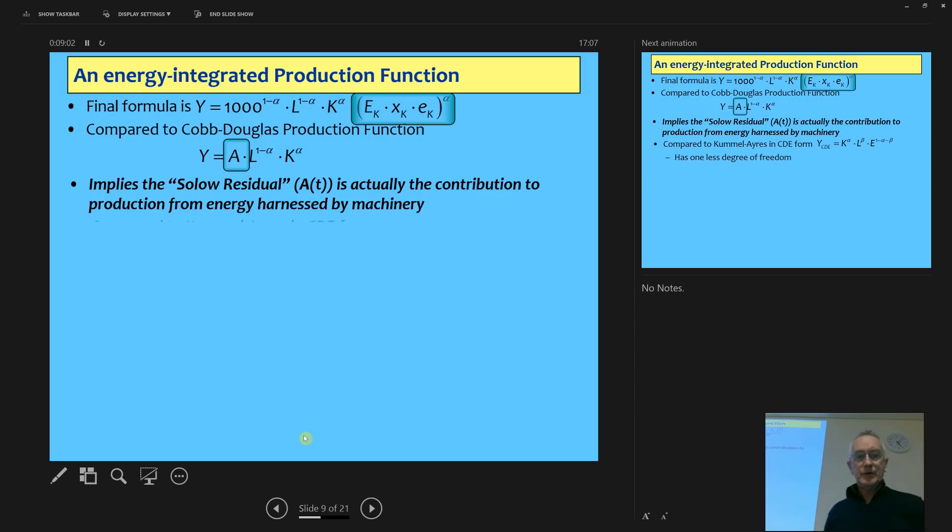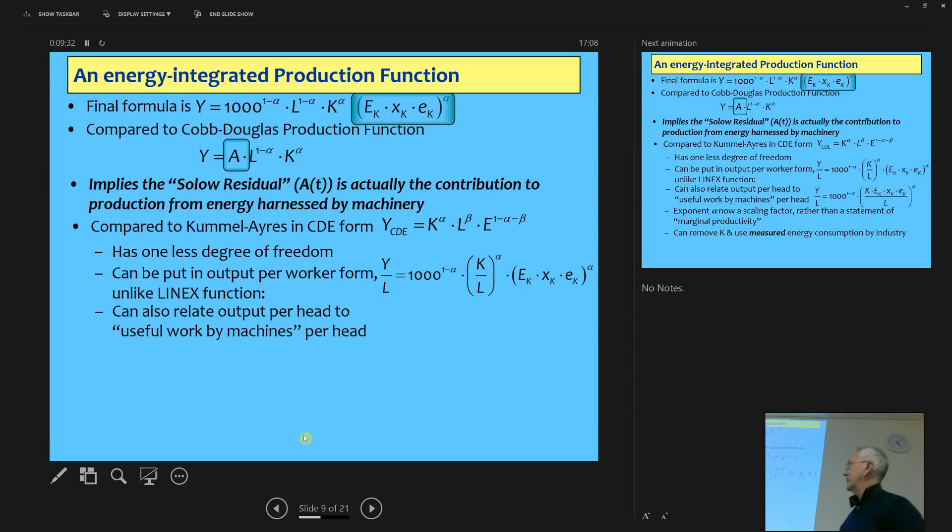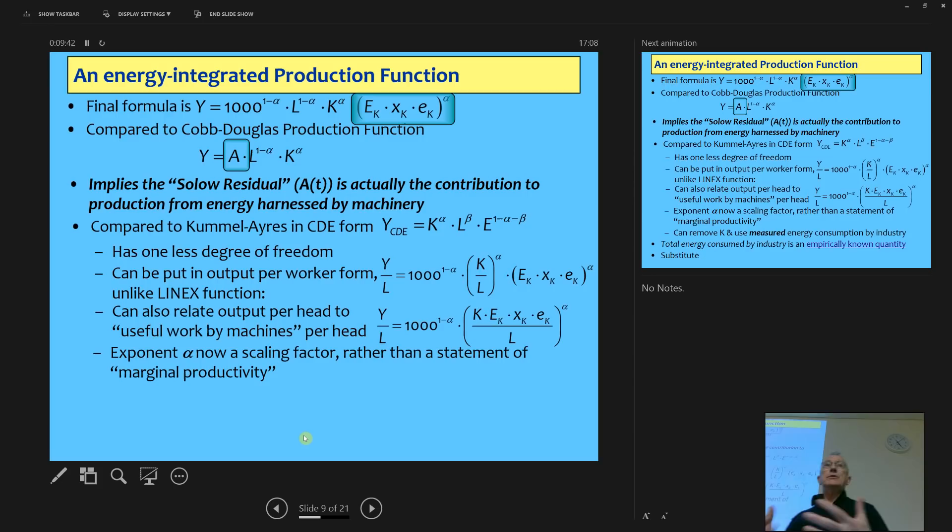If we compare it to the Cobb-Douglas production function, it implies the Solow residual is actually the energy contribution of capital to output. No wonder it takes up so much of the actual statistical findings. If I compare it to the Kummel-Ayres form, where they've got a Cobb-Douglas production form as well as the LinEx form, there's one less degree of freedom. So it's harder to fit my model to the data, which is actually a good thing, more constrained. And you can also put it in terms of output per worker form or capital per labour output worker form, which you can't do with the LinEx function, because the LinEx doesn't have the right exponent values. So I can say output per unit of labour is some function of capital per unit of labour times the energy, the machinery in general.